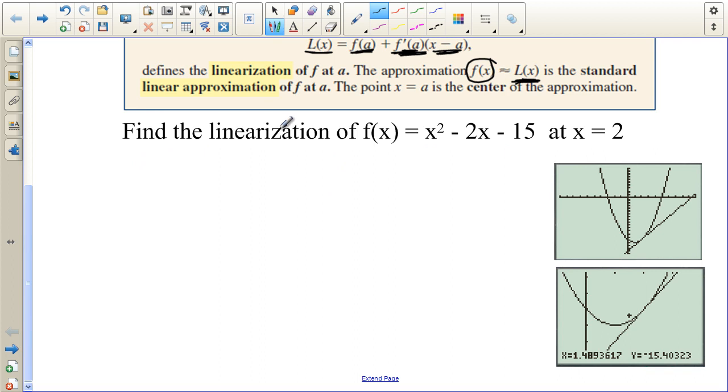So, well, here we have it. Find the linearization of f(x) equals this parabola at x equals 2. So we want to find a line. Here's the parabola right here. And we want to find an equation of a line that we could use to approximate the values of the curve. But this line is only good right at x equals 2 or near it. Once you start getting away from 2, then these values are going to get farther and farther apart.